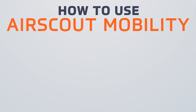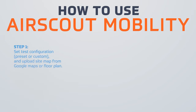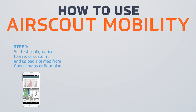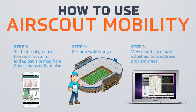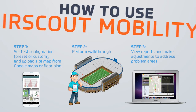How to use AirScout Mobility. The first step is to set the test configuration, which can be preset or customized, and upload the sitemap from Google Maps or a floor plan. Next, the technician can perform the walkthrough across the facility in question. The licenses are downloaded automatically to the device and the results are then stored in the cloud. After the walkthrough, you can view the results in AirScout Mobility Studio and make adjustments to address problem areas in the venue.